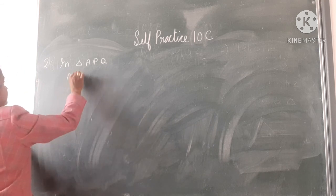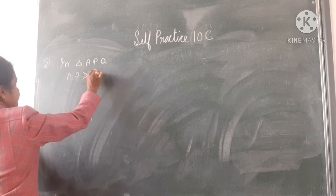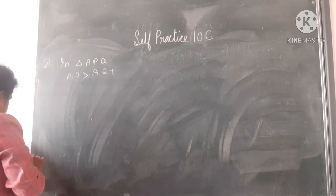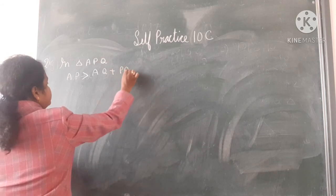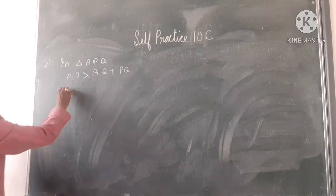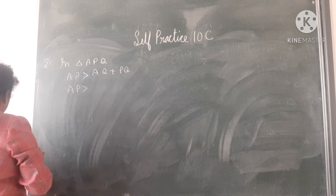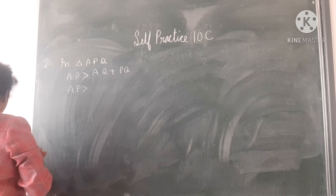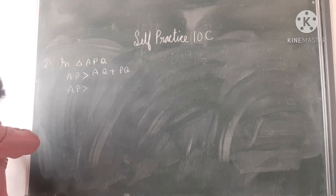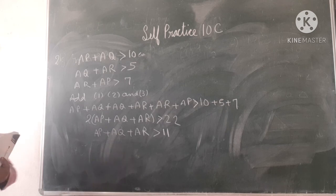AP plus AQ is greater than PQ. Similarly, AQ plus AR is greater than QR, and AR plus AP is greater than PR. Let me put a stop now.